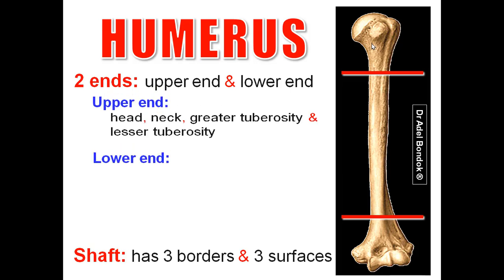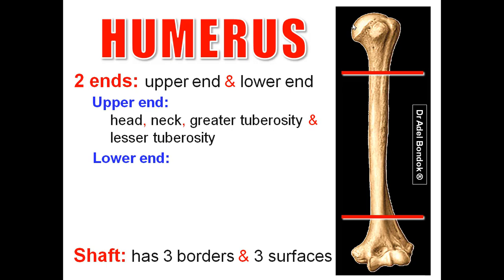The upper end is formed of head, neck, greater tuberosity, lesser tuberosity, and between the two tuberosities, the bicipital groove or intertubercular groove. Regarding the neck, we have anatomical neck and surgical neck. The anatomical neck is the constriction beyond the head. The surgical neck is the constriction below the two tuberosities.